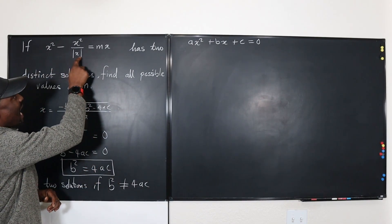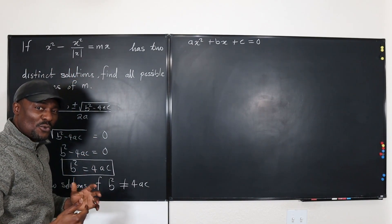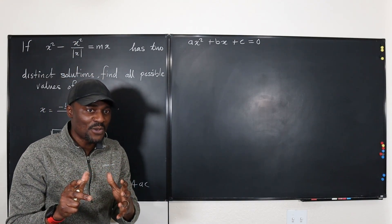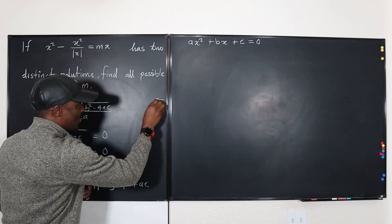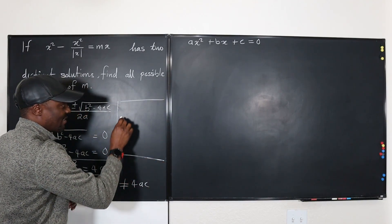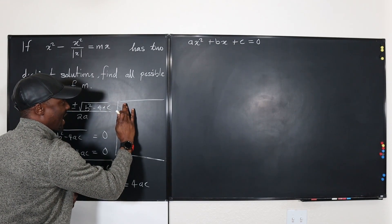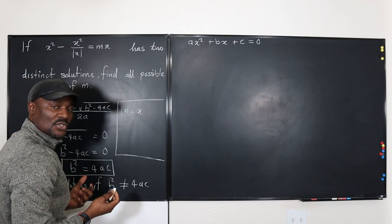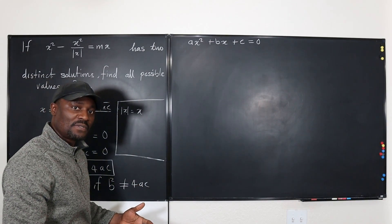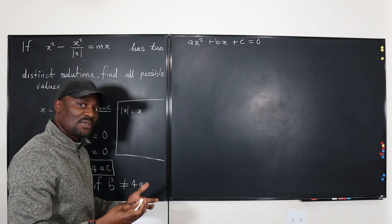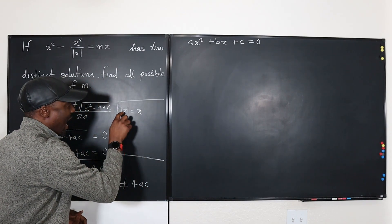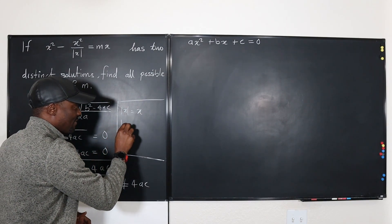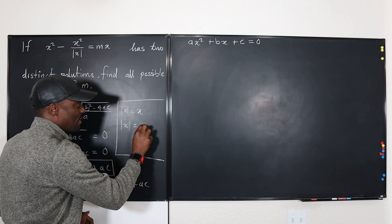This is a problem because the equation has absolute value of x. It would be easier if we just wrote x because we can cancel it out. By definition, the absolute value of x is equal to x — just as the absolute value of 3 is equal to 3. But the absolute value of x could also be negative x.